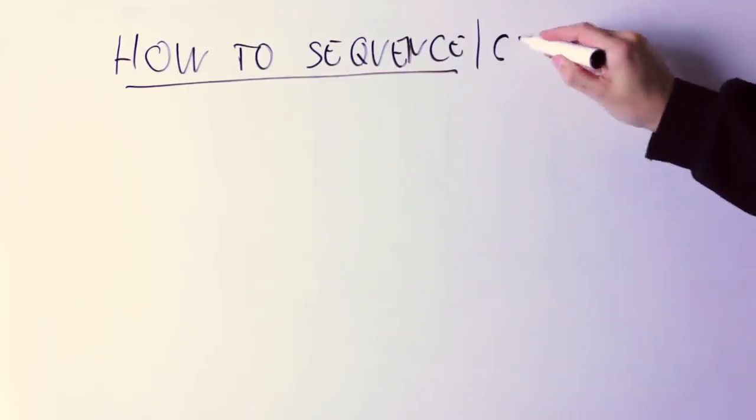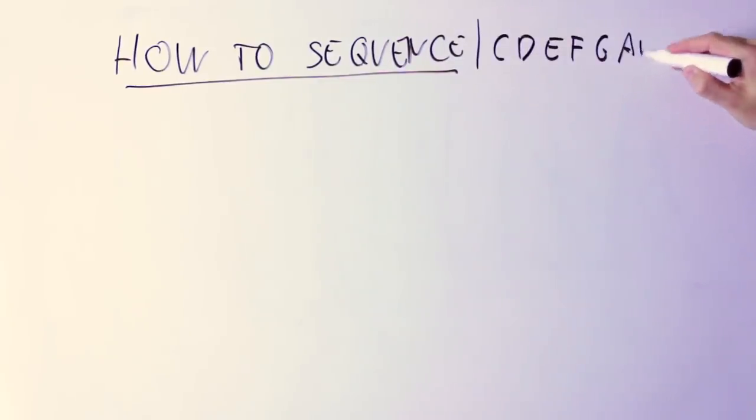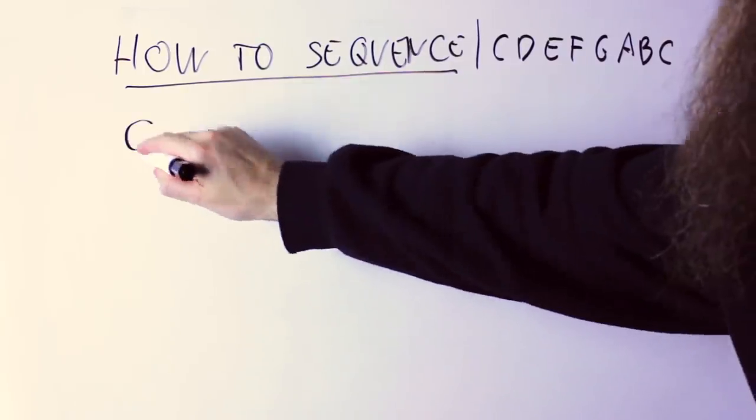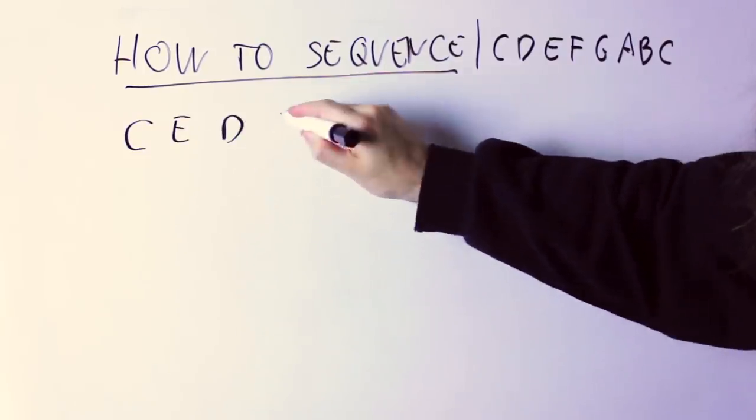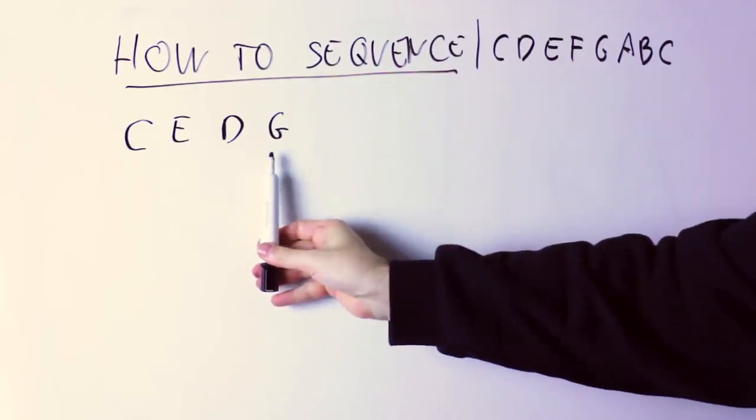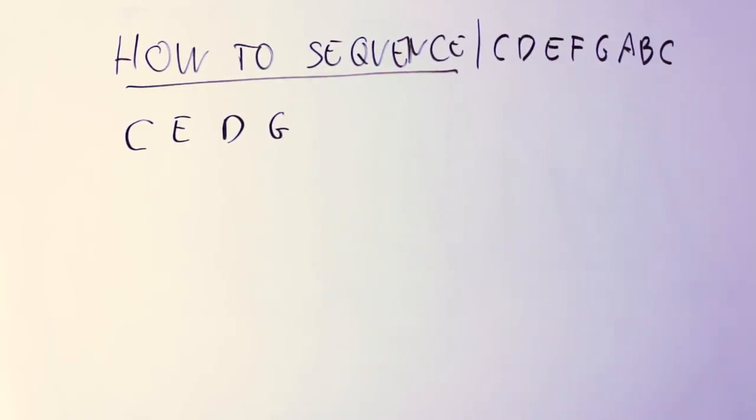So first of all you need a scale and let's pick the C major scale: C, D, E, F, G, A, B. Now you have to take a melody and let's have a simple melody. I'm going to pick something easy like C, E, D, G.